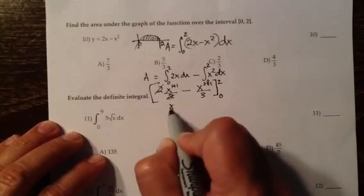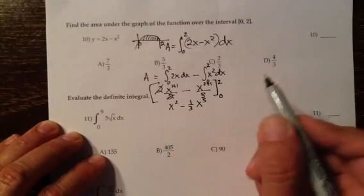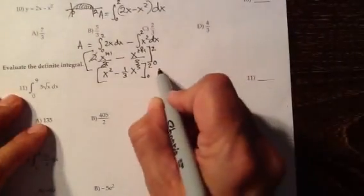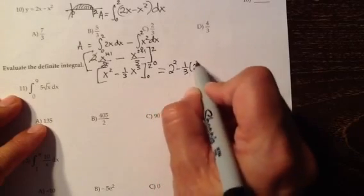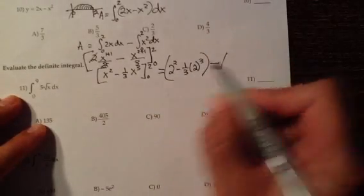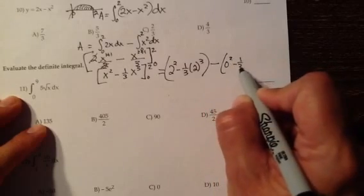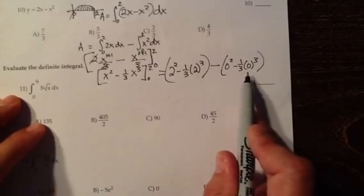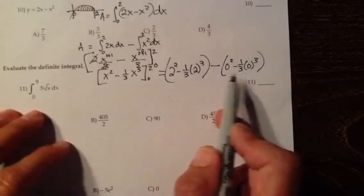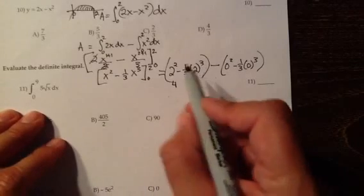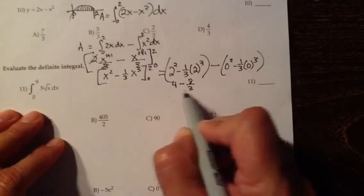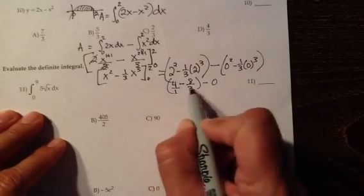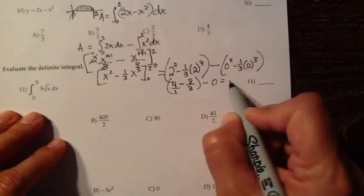Let's clean up the function and call this x squared minus 1/3 x to the 3rd. Now fill in 2 first: 2 squared minus 1/3 times 2 to the 3rd, then subtract what we get when we fill in 0. Top number goes first, bottom number last. 2 squared is 4; 2 to the 3rd is 8; 1/3 times 8 is 8/3. Filling in 0 gives 0. So 4 minus 8/3 equals 12/3 minus 8/3, which is 4/3.